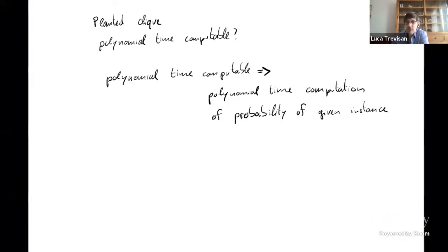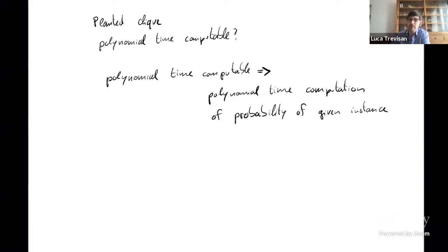On the other hand, all those distributions are samplable because they're literally described through a sampler. What does a planted clique distribution look like? Sample a random graph, pick a subset of vertices, make them a clique — that's the graph. The description I gave is a sampler.